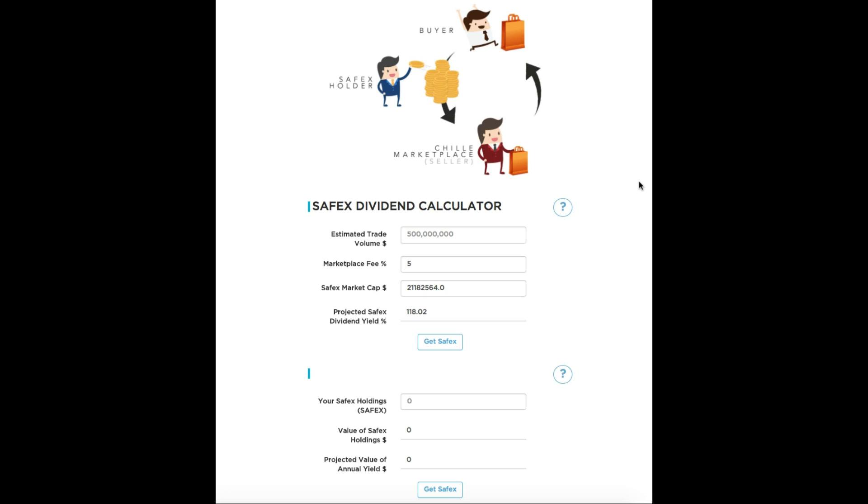As you can see, this calculator is divided in two parts. First part, there are four variables that you can see. The first one is estimated trade volume that is 500 million dollars in 2018 and this number represents how much value will be all goods and services that will be sold in our marketplace in 2018.